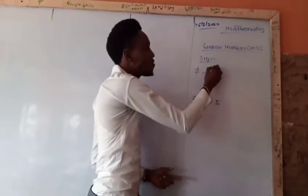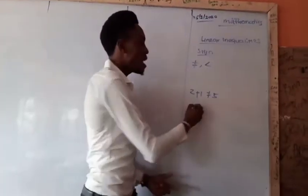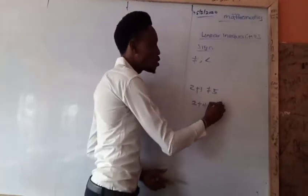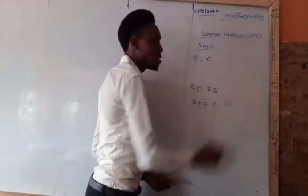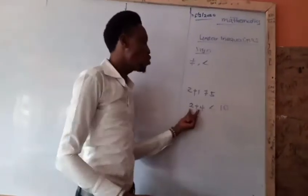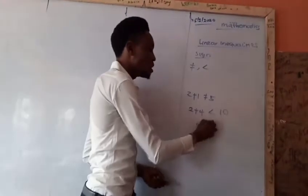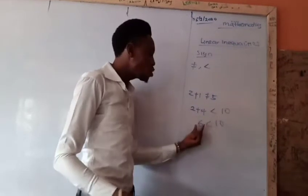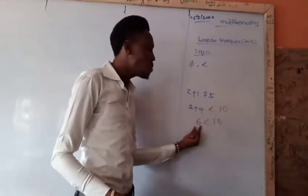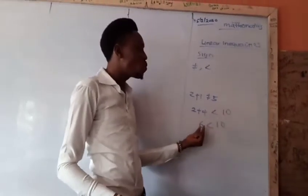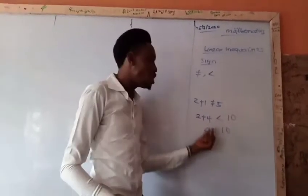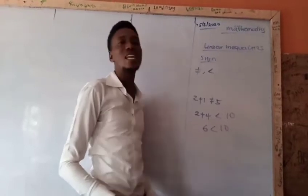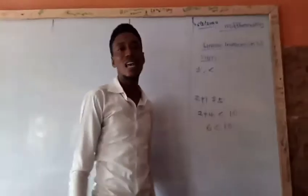We also have 'less than.' For example, 2 plus 4 is less than 10. We see that 2 plus 4 gives us 6, and 6 is less than 10 — meaning 6 is smaller than 10, and 10 is greater than 6.